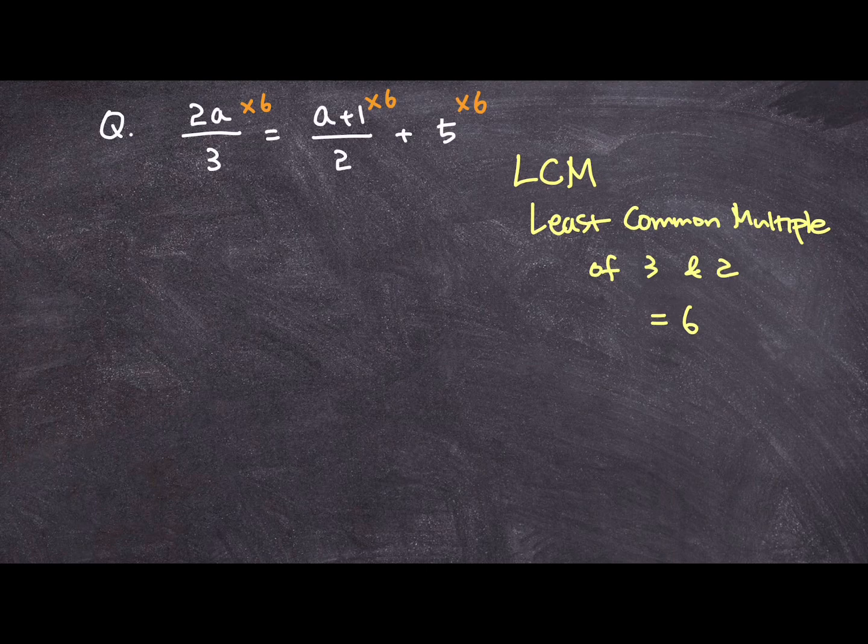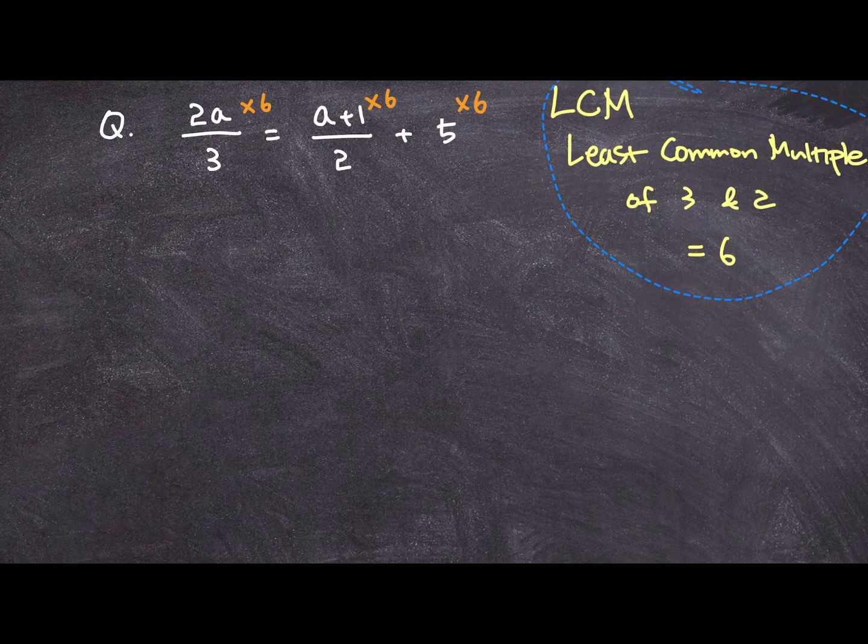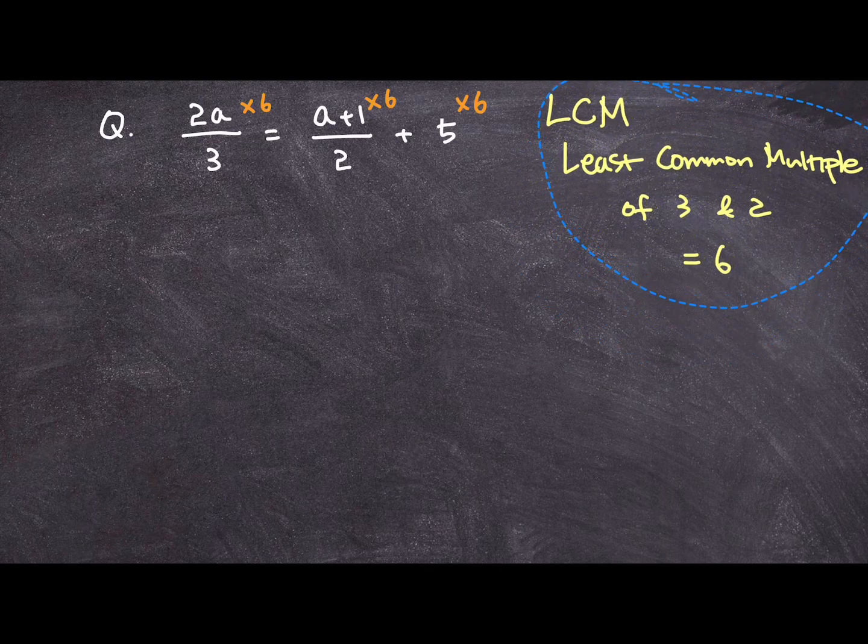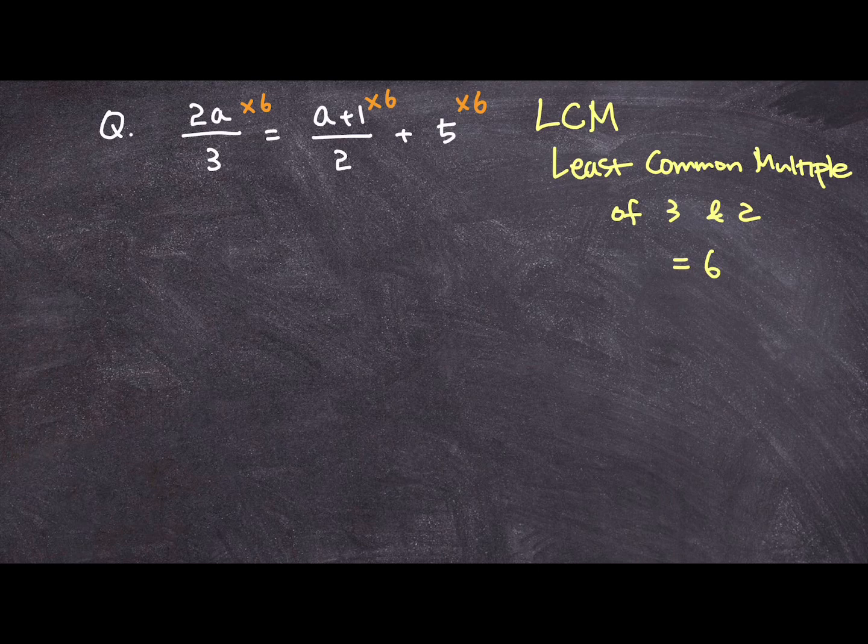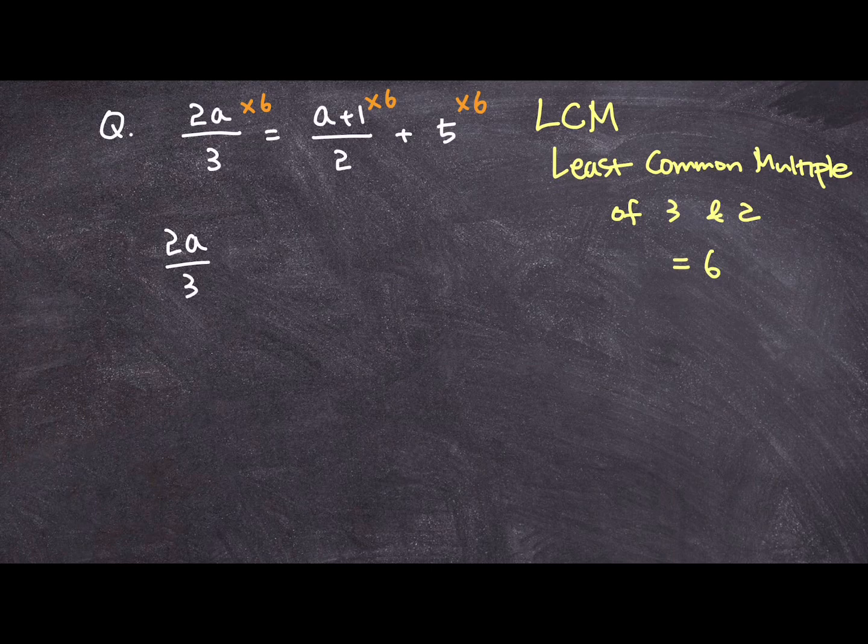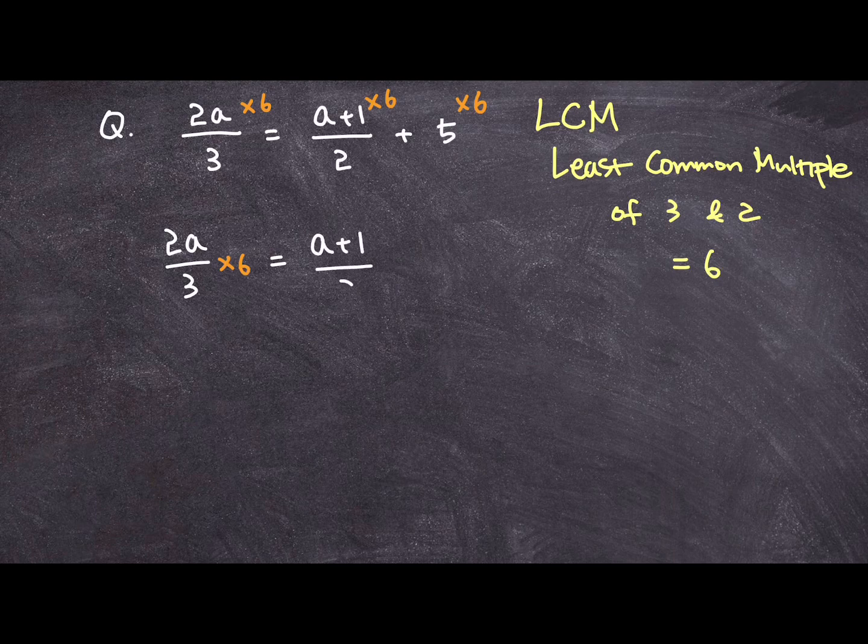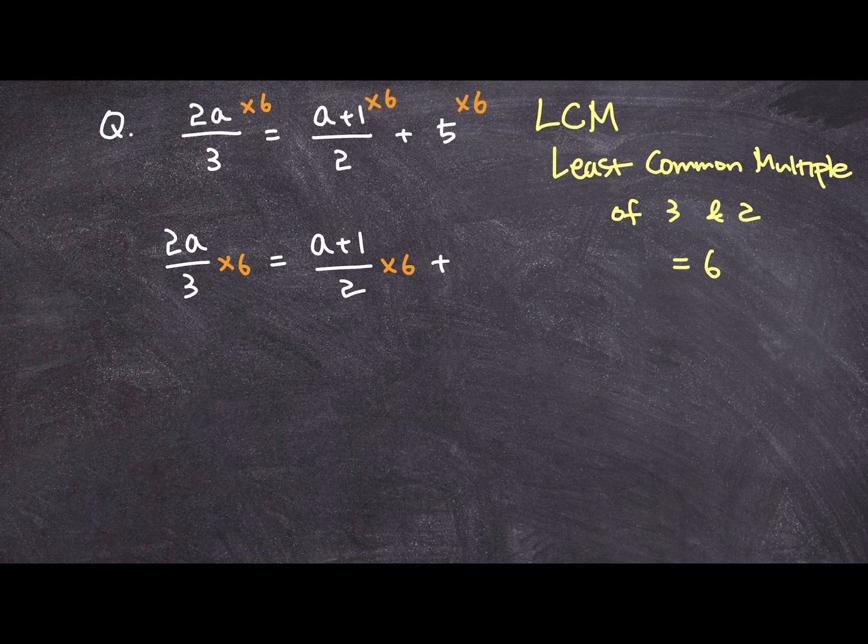And let me rewrite that to make it more visible to you. Meanwhile, I'm gonna put it away like that. And let's rewrite the whole expression. I have 2a over 3 multiplied by 6 is equal to a plus 1 over 2 multiplied by 6 plus 5 and do not forget multiplying 6 there as well.